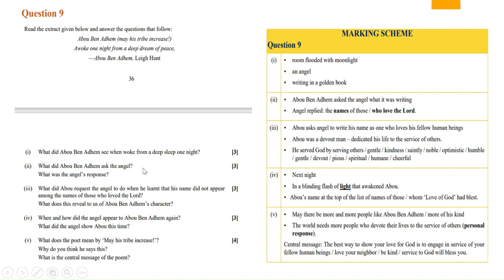Now let's move on to the second question. What did Abu Ben Adhem ask the angel and what was the angel's response? Abu Ben Adhem asked the angel what it was writing. The angel replied or responded the names of those who love the Lord. So this was the answer which you were expected to write for question number two.